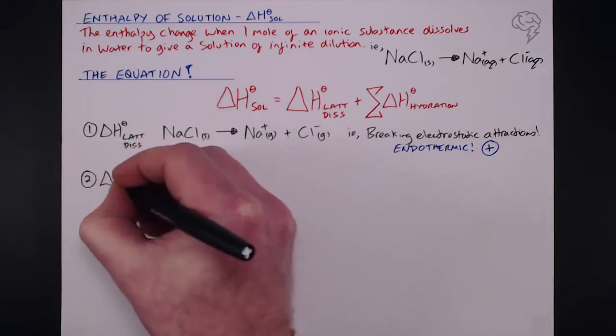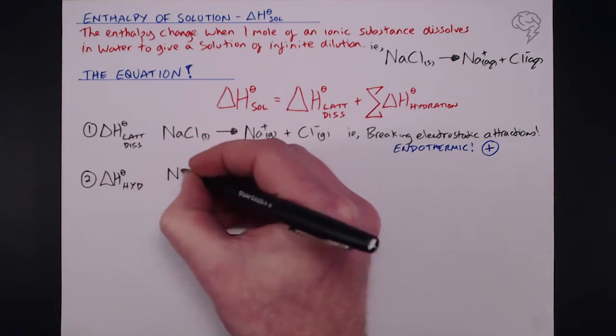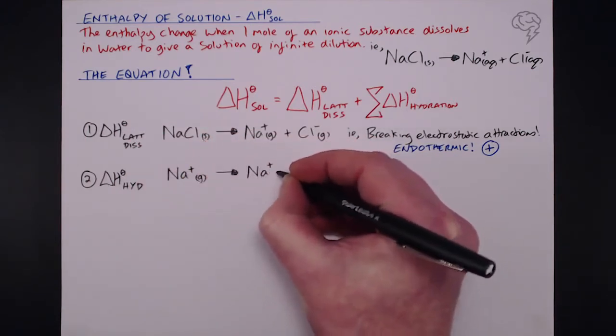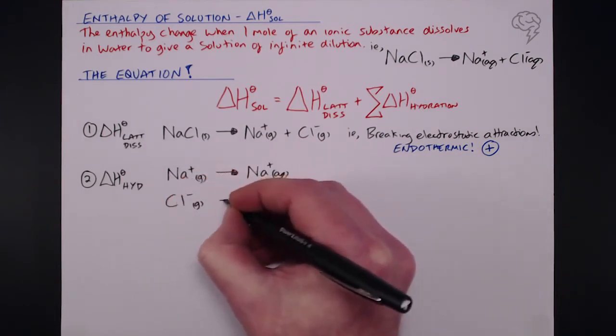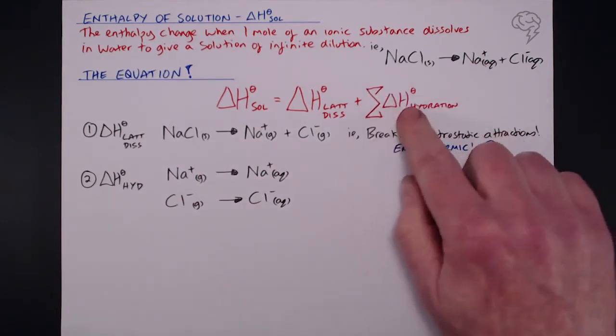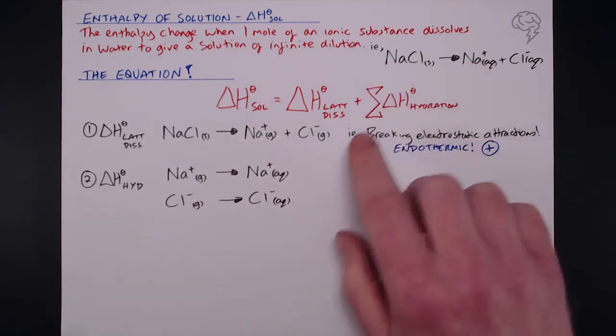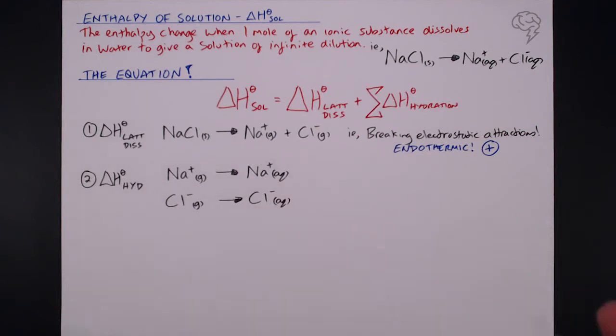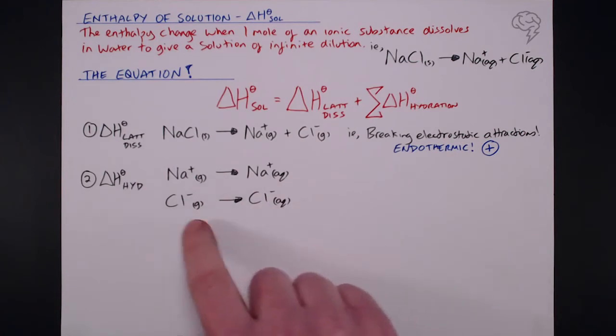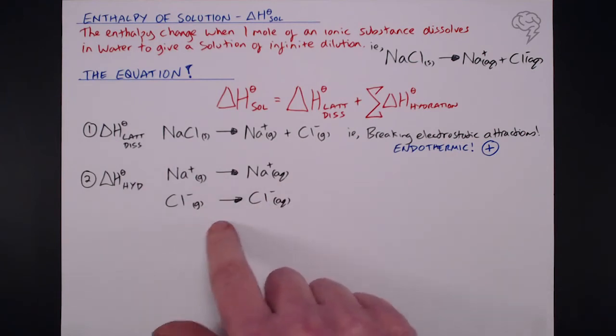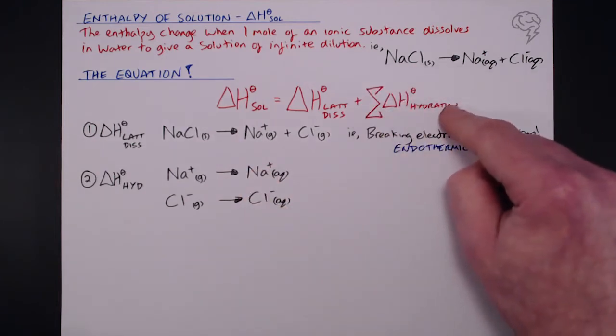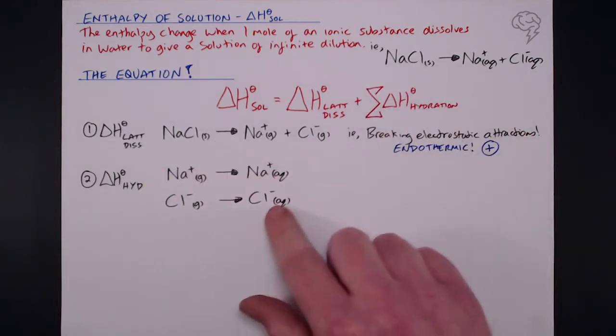So delta H hydration can be represented by equation by taking our gaseous ions and turning them into aqueous ions. So they're associating with water molecules. We say the sum of our hydration up here because we've got two different ions to take into account. We've got our positive ion, which needs to be turned from gaseous to aqueous. We've got our negative ions that need to be turned from gaseous to aqueous. We need the values for both of these to put into this equation.